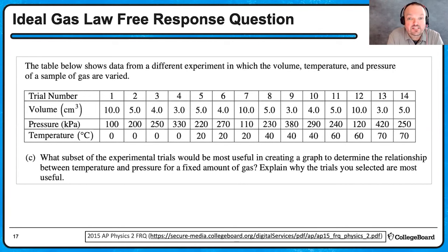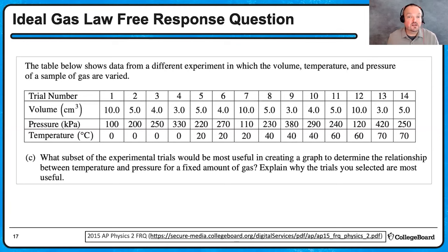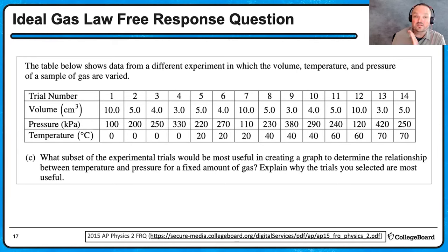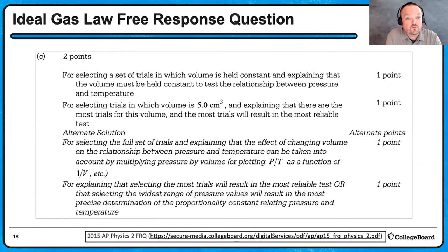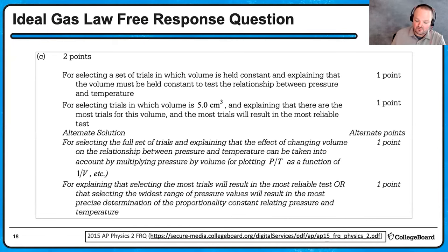The next part gives a data set and asks which subset of experimental trials would be most useful for creating a graph to determine the relationship between temperature and pressure for a fixed amount of gas. I need lots of different trials at the same volume, since I'm changing temperature and seeing how it affects pressure. Looking at the data table, the volume that appears most commonly is 5 cubic centimeters. The rubric confirms: select trials where volume is constant and equals 5, explaining that the most trials for this volume will result in the most reliable data.